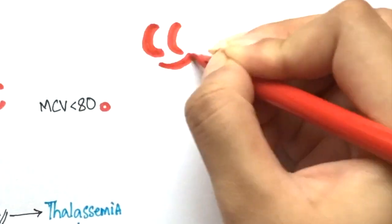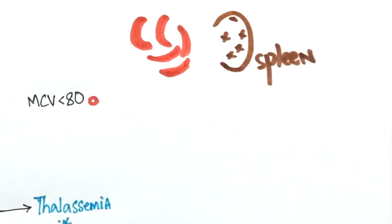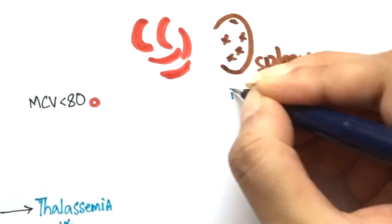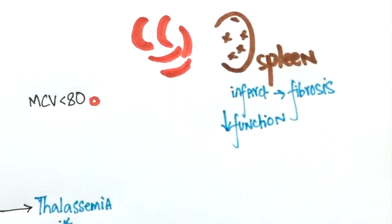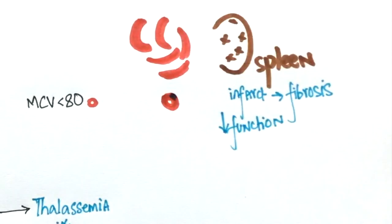People with sickle cell anemia can have recurrent splenic infarcts. This can lead to fibrosis and a decrease in the function of the spleen. A normal spleen removes the nuclear remnants of red blood cells. In patients with sickle cell disease, since the function of the spleen is lost, the nuclear remnants of the RBCs remain in the cells and form the Howell-Jolly bodies.